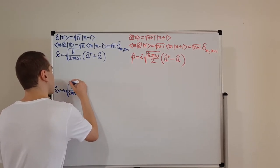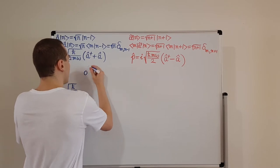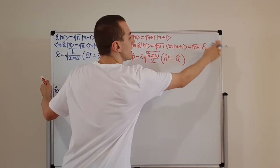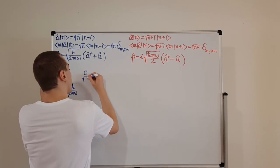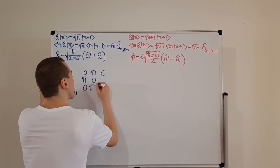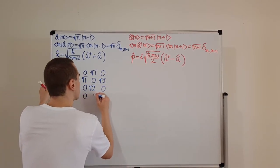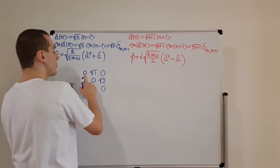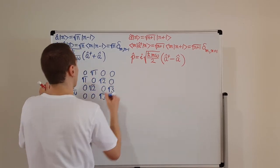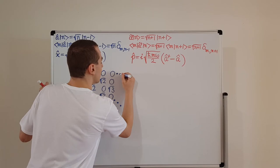The position matrix, with the factor √(ℏ/2mω) out front, has zeros on the diagonal. Taking the sum of A and A-dagger, we get square root of 1 appearing both above and below the diagonal in the first off-diagonal, then square root of 2 in the next off-diagonal, then square root of 3, and so on. The diagonal remains zeros throughout, and this pattern keeps going downward indefinitely.